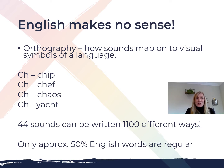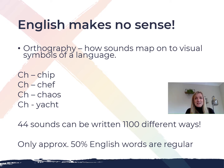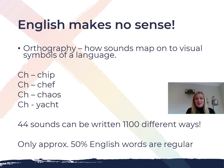This has a huge impact on children learning to read and write in English. Interestingly, the incidence of reported dyslexia varies widely by country — places with a shallow orthography such as Italy have only about half the incidence of dyslexia found in the United States. Within the UK we have 44 sounds that can be written in 1,100 different ways, and only approximately 50% of English words are regular.